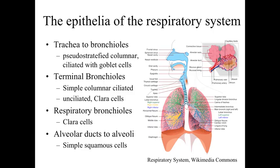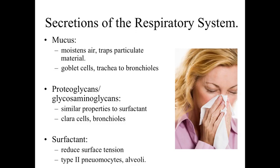Within the respiratory bronchioles, ciliated cells drop out, leaving Clara cells as the predominant cells lining the epithelium. Ultimately, down in the alveolar ducts and alveoli, we have simple squamous epithelium — simple squamous cells that minimize the distance or barrier between air and blood to allow for very rapid diffusion of gases across the boundary.